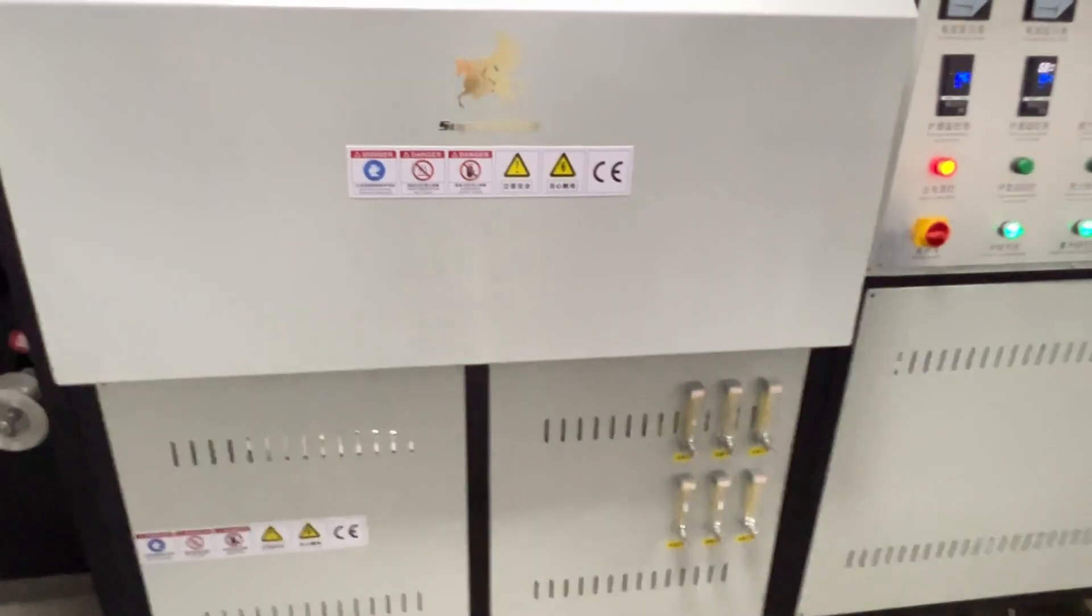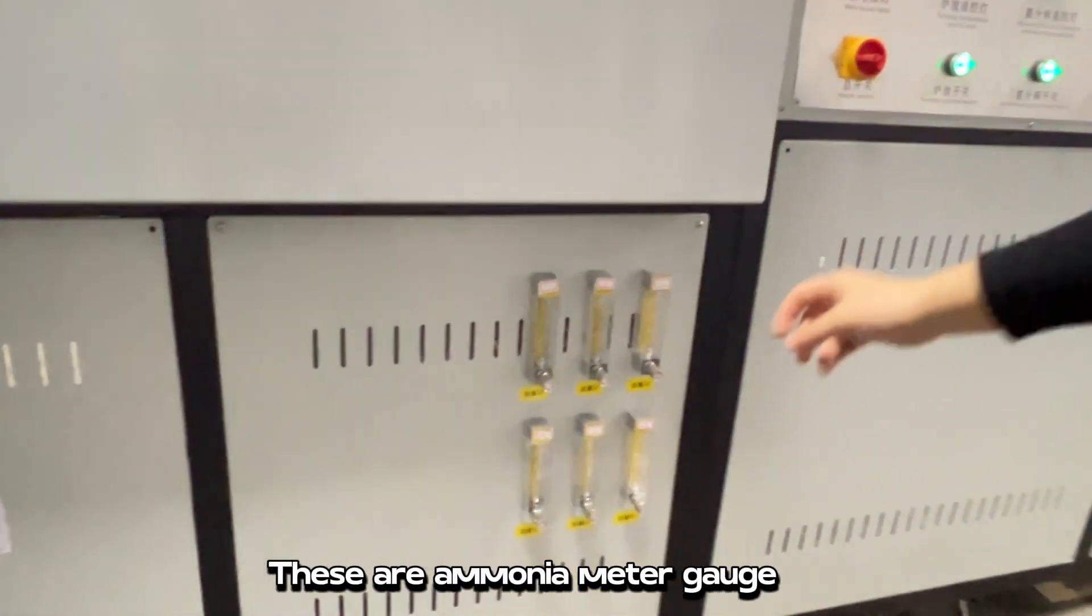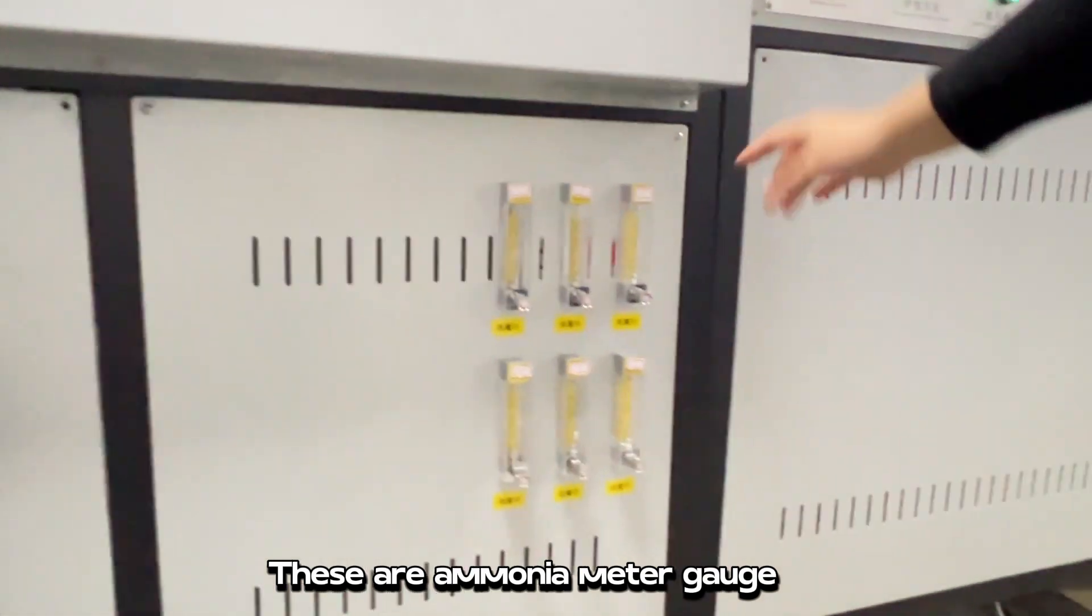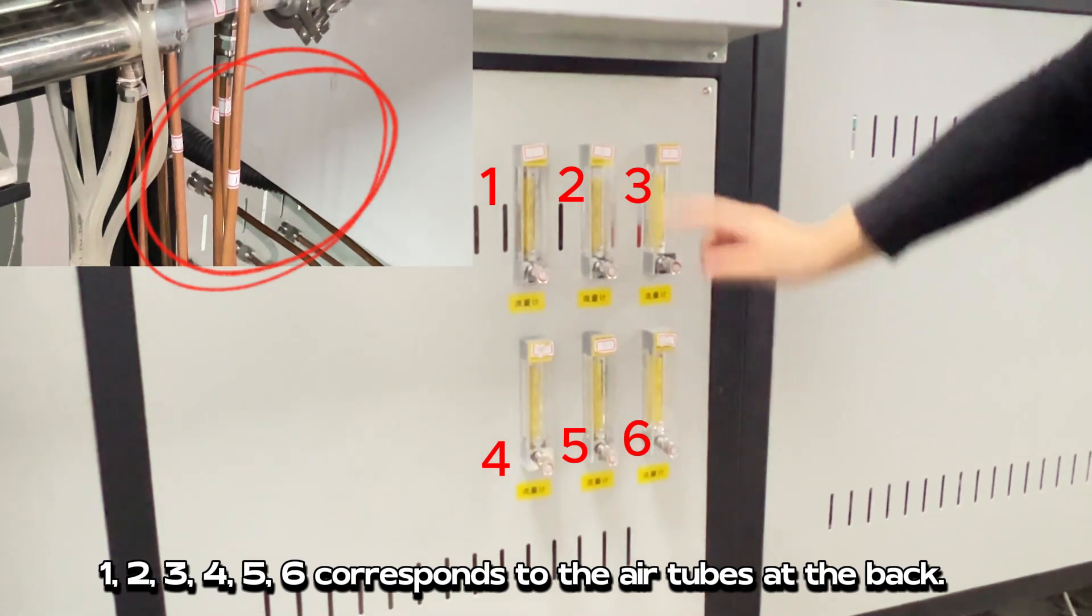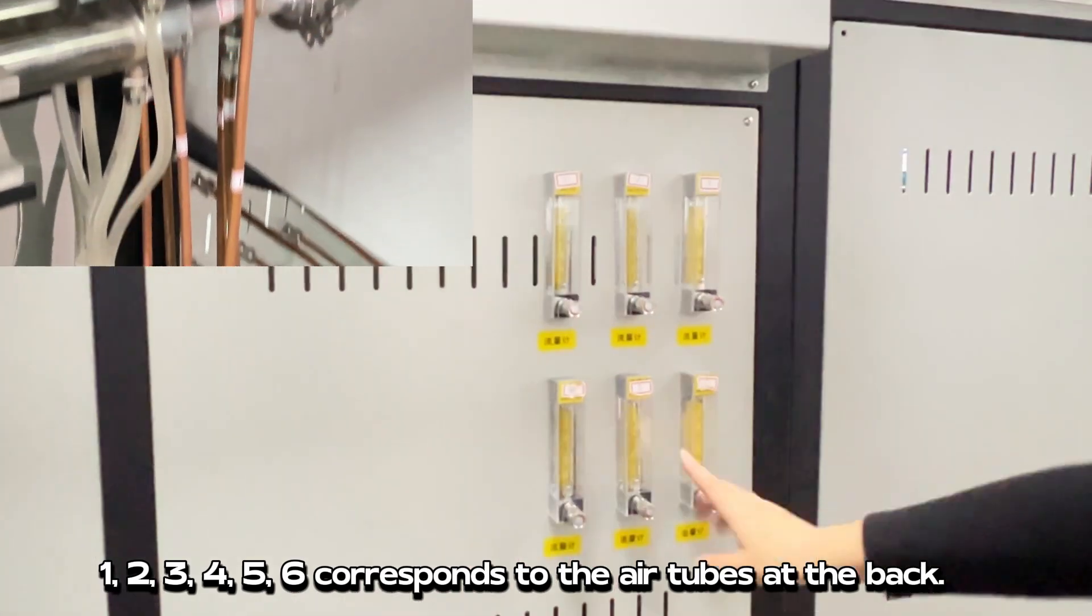Let's go back to the front of the machine. These are ammonia meter gauge. 1, 2, 3, 4, 5, 6 corresponds to the air tubes at the back.